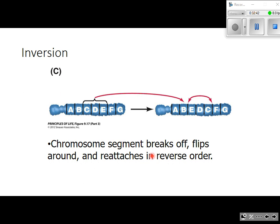An inversion is when a portion of DNA breaks off of the chromatid during crossing over, but before it reattaches, it inverts — it flips around. When the genes reattach, they're in the wrong order. So instead of A, B, C, D, E, F, G, you get A, B, E, D, C, F, G — that middle section is inverted, which means those genes will eventually be transcribed backwards. When the ribosome reads the code during translation, it will be reading in the wrong direction. Thankfully, chromosomal mutations like these are rare, but they do occur when things go wrong during meiosis.